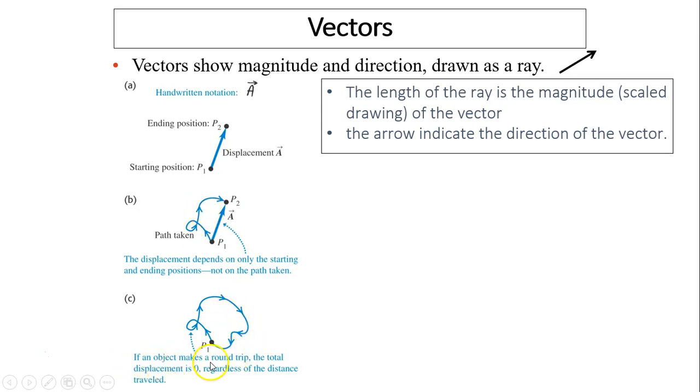If an object makes a round trip, the total displacement is zero. Regardless of the distance traveled. So if you're starting and ending in one position, you'll have zero displacement.